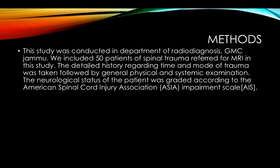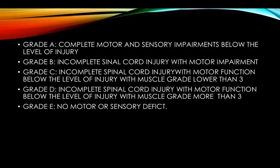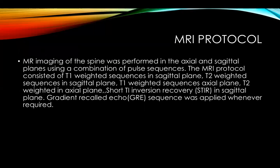The study was conducted on 50 patients in the department of Radio-Diagnosis, GMC Jammu. Detailed history and examination was done according to the American Spinal Cord Injury Association (ASIA) impairment scale, which has five grades. Grade A is complete motor and sensory impairment; Grade E is no motor or sensory deficit. In Grades B, C, and D, sensory function is intact. In Grade B there is complete motor impairment; in Grade C the power is less than three; and in Grade D the power is more than three.